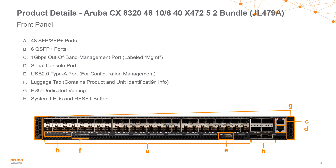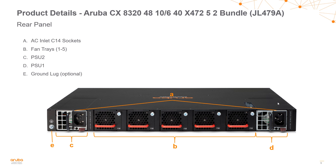Zooming in on the 48-port SFP+ model, we can see two rows of 48 SFP+ ports and six 40-gig QSFP+ ports on the right. On the far right there is an RJ45 out-of-band management port as well as an RJ45 serial console port. System health LEDs are on the left, and air inlets run along the left, right, and front of the switch. There is also a handy luggage tag. Looking at the back, both power supplies and all five fan trays come pre-installed, along with ground lugs for grounding the switch.